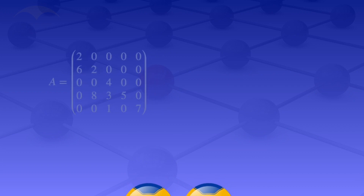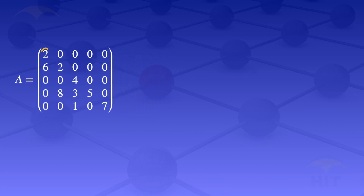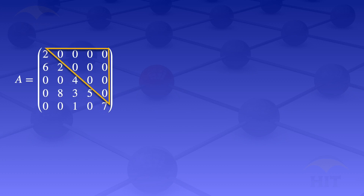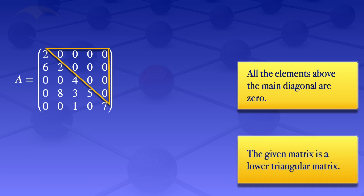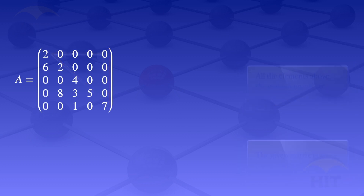Looking at that matrix by inspection, if I look at the diagonal there, those elements — all the elements above that main diagonal are 0, the ones that I've highlighted there. And if all the elements above the main diagonal are 0, then that given matrix is a lower triangular matrix. For triangular matrices, the eigenvalues lie on the main diagonal.